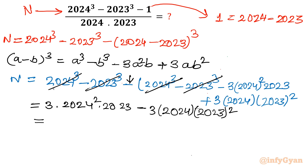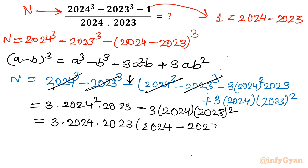Now I can see 3·2024·2023 is common. Once I take this term common: in the first place we will have 2024, in the second term we will get 2023. Now it would simplify to 1. So our ultimate numerator is 3 × 2024 × 2023.